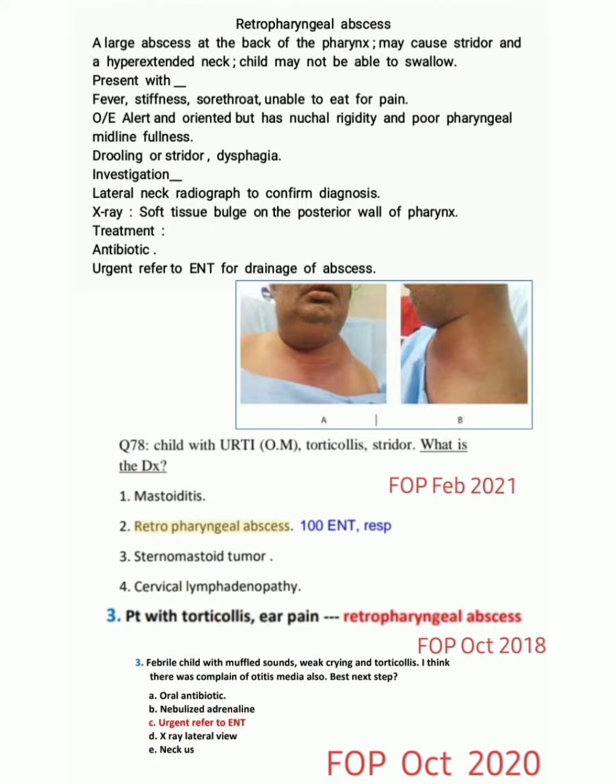Looking at the attached image, you can see how Retropharyngeal abscess appears. Now there is a question from FOP: a child with upper respiratory infection, otitis media, torticollis, and stridor — what is the diagnosis? The diagnosis is Retropharyngeal abscess. The key points given are otitis media causing Retropharyngeal abscess, along with torticollis and stridor as features.